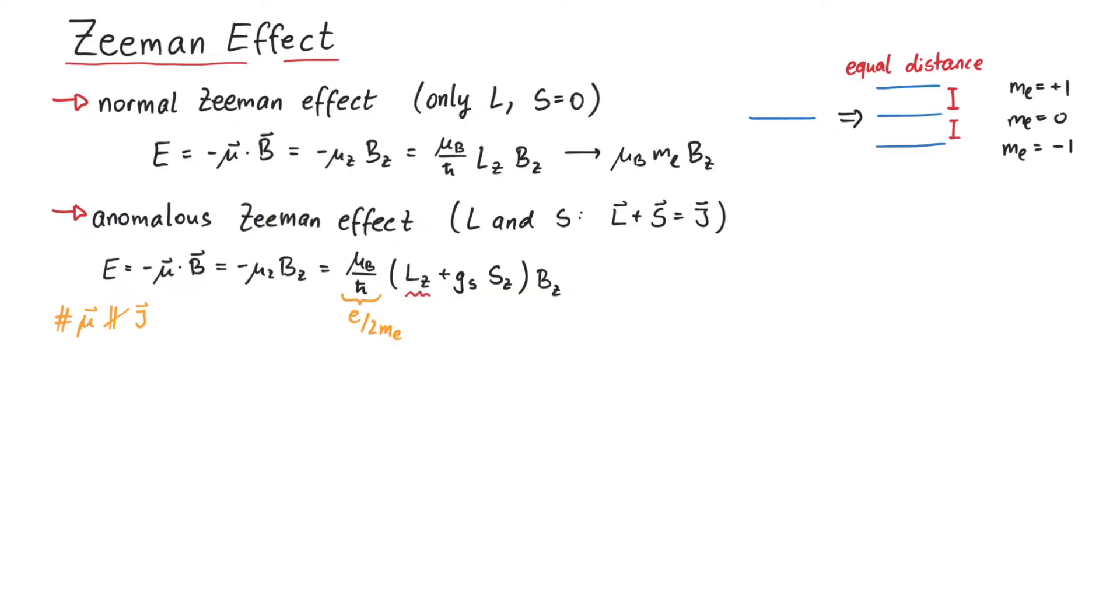However, lz and sz are anyway meaningless when we are dealing with a total spin j. So we have to rewrite it somehow. After some steps, which are out of the scope of this video, we can write this also as mu b gj times bz,